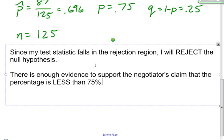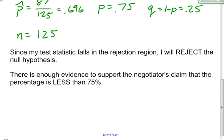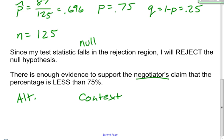One last thing before I stop this video: when you write your final conclusion, it's important to include some kind of context. I could have said there is enough evidence to support the negotiator's claim that the percentage of workers that would go on strike is less than 75%. In your conclusions, make sure you say something about the null hypothesis — whether you reject or retain it — and also say something about the alternative hypothesis, which holds the claim. I hope this video has been helpful, and have fun in your stats class!